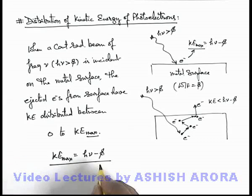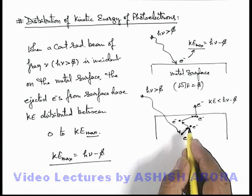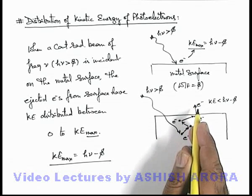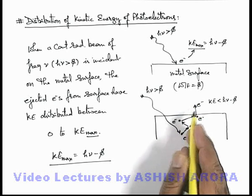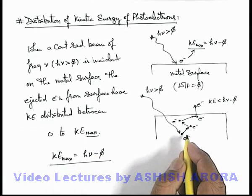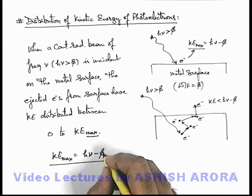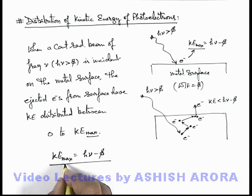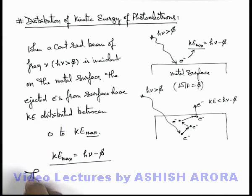And this energy corresponds to the specific electron which does not collide with any other electron while coming out from the metal surface. In that situation, the whole of the energy supplied by the photon will be kept by the electron. Only the work function is consumed and the remaining will be the kinetic energy, so that is the maximum possible kinetic energy.